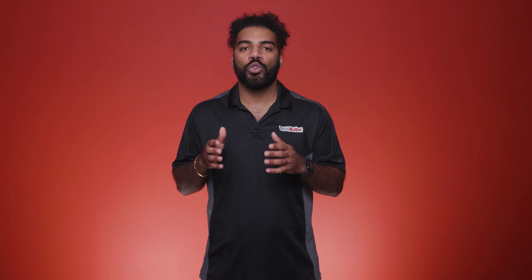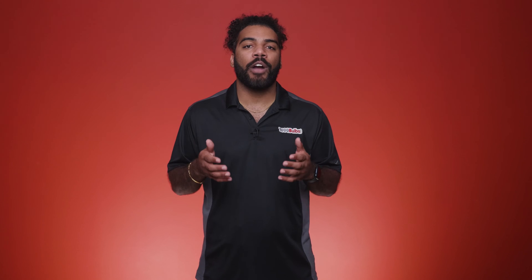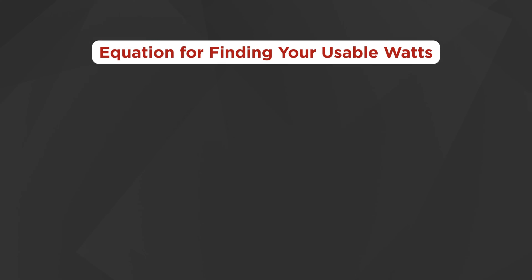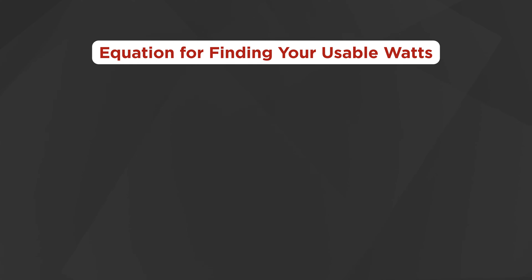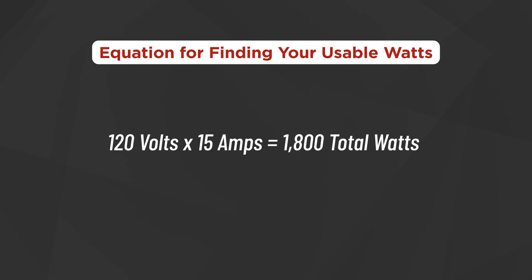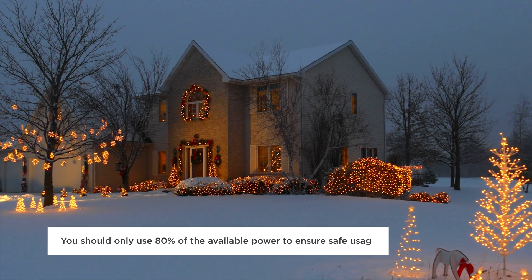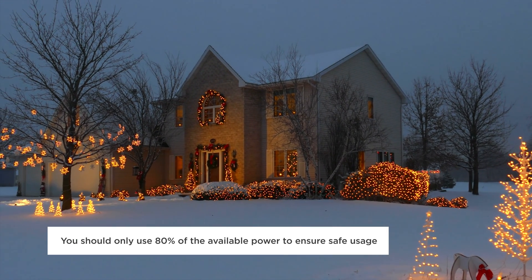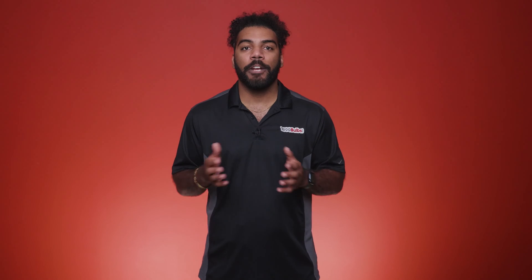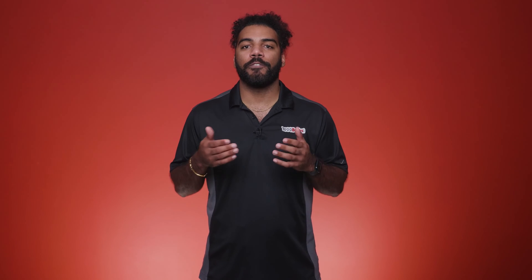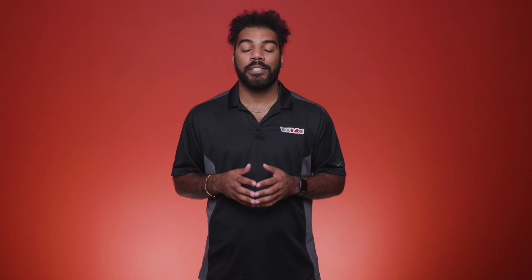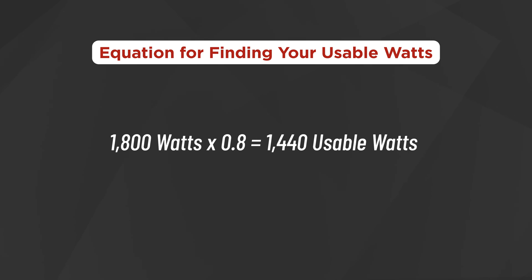Multiply these two values together for the total watts, or the amount of power you have available. For example, if you have a 15 amp circuit, your equation would be 120 volts times 15 amps equals 1,800 total watts. Since Christmas lights draw a continuous load of power, you should only use 80% of the available power to ensure safe usage. Therefore, you take the total wattage and multiply that by 0.8 to find the number of usable watts. In this case, 1,800 watts times 0.8 equals 1,440 usable watts.